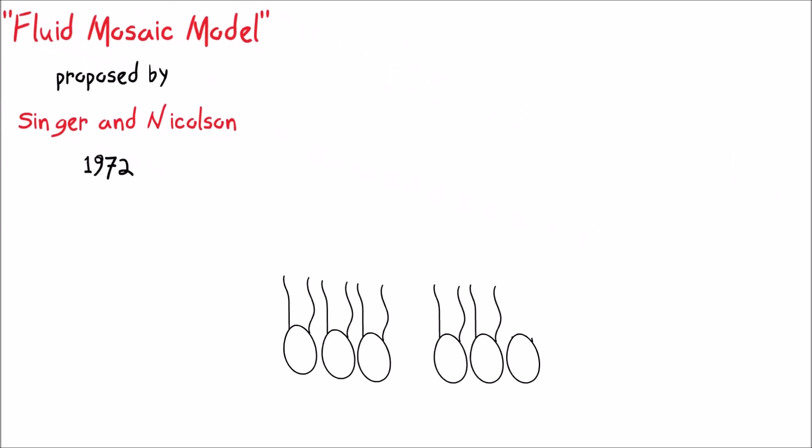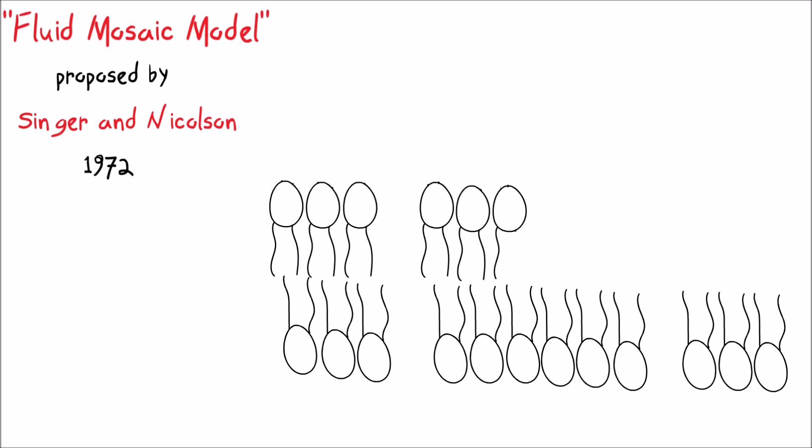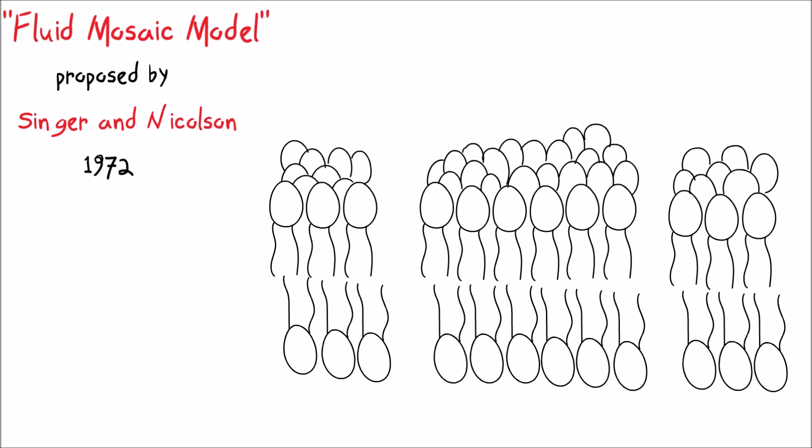According to this model, the plasma membrane is formed by two layers of phospholipids. These two layers are arranged opposite to each other,